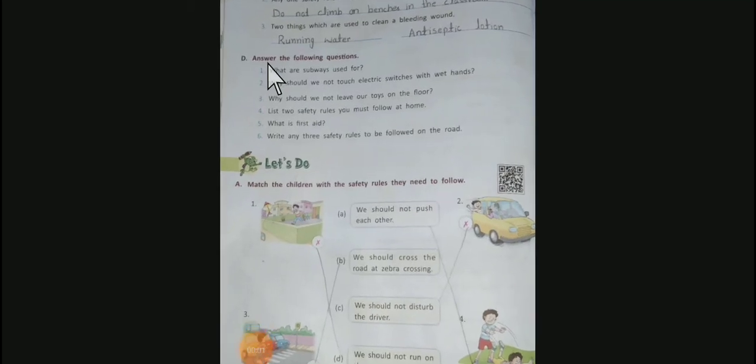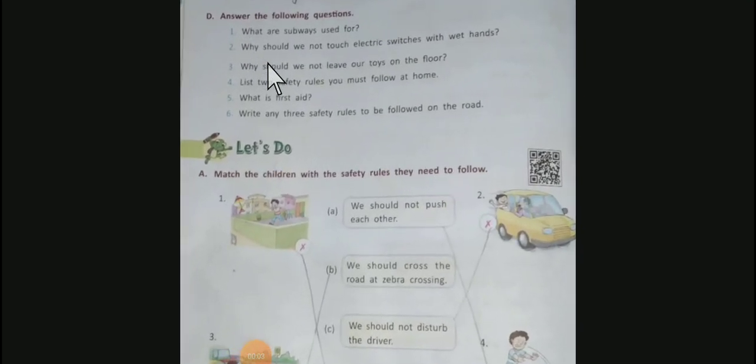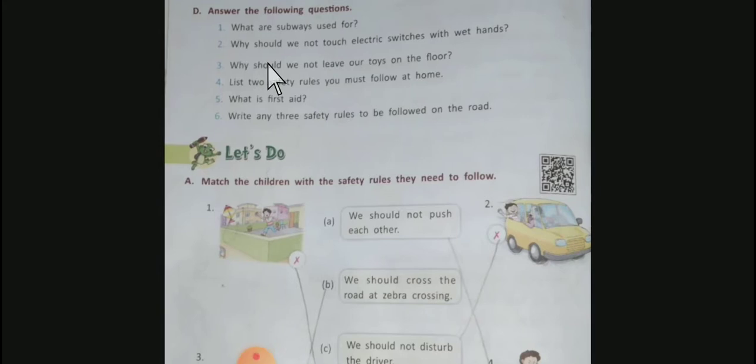Welcome to Digital Eden Garden. Today the subject is Science Grade 3, Lesson Number 2: Safety and First Aid. This is the fifth lecture of this chapter. Today we'll study the answer questions and remaining exercises of this chapter. So let's start.